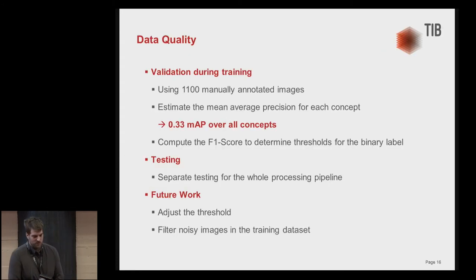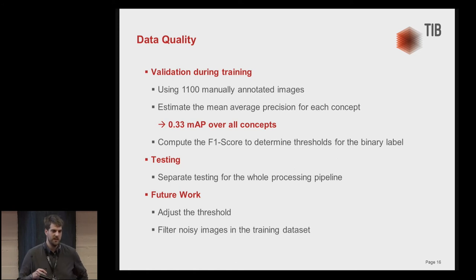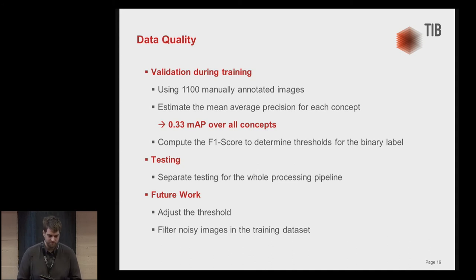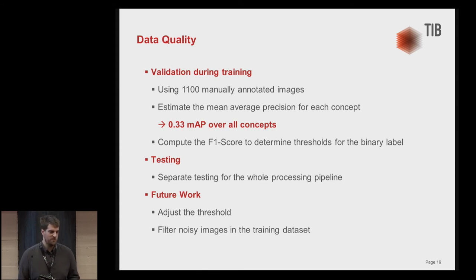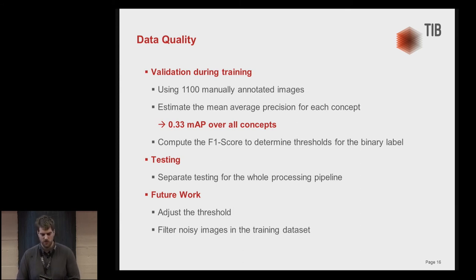Regarding data quality: during training, we continuously evaluate our model — after 1,000 iterations we check if the model is still learning or overfitting. We generated a separate validation dataset with 1,100 manually annotated images and compute the mean average precision on it. We take the model with the highest score, which achieved 0.33 mean average precision over all concepts. Since we want to predict binary labels rather than probabilities, we compute the F1 score to determine the thresholds — deciding, for example, whether a video shows a conference or not.